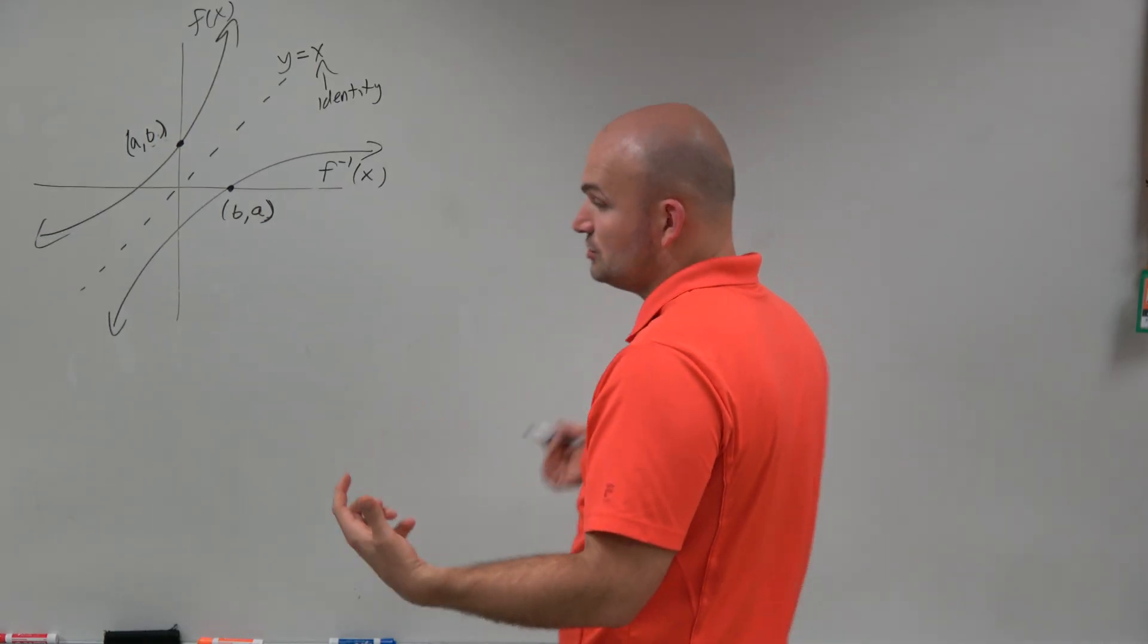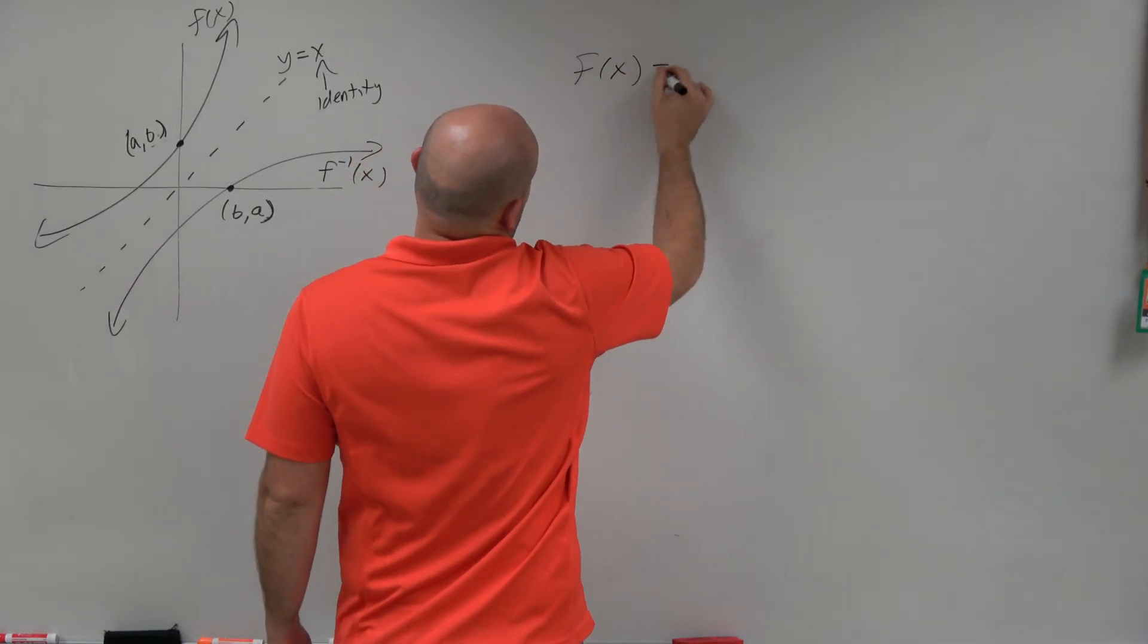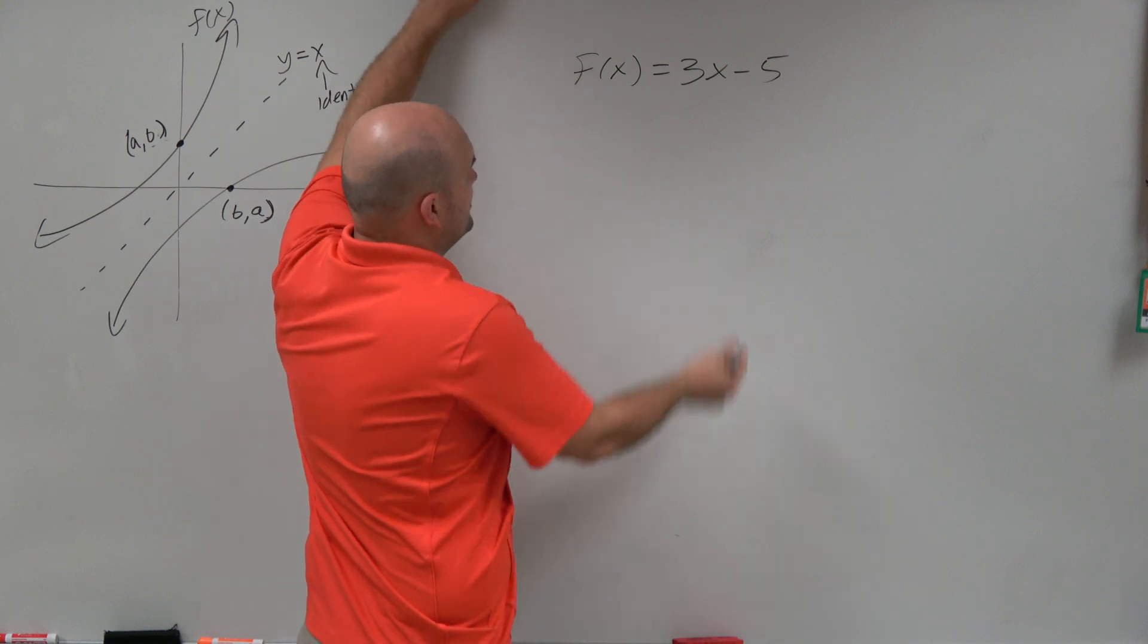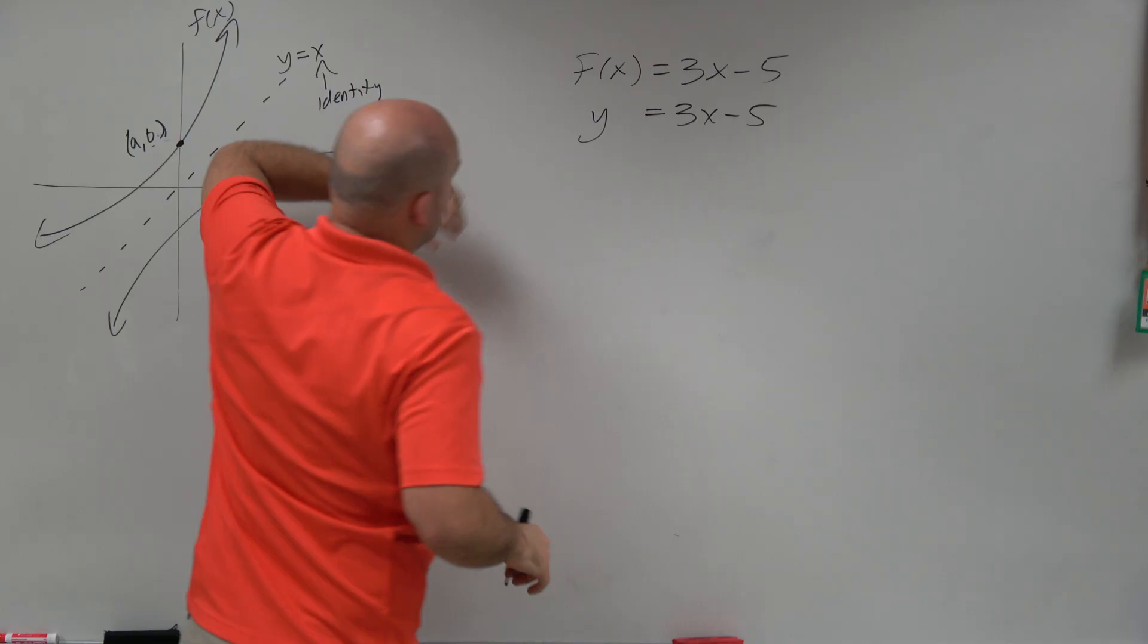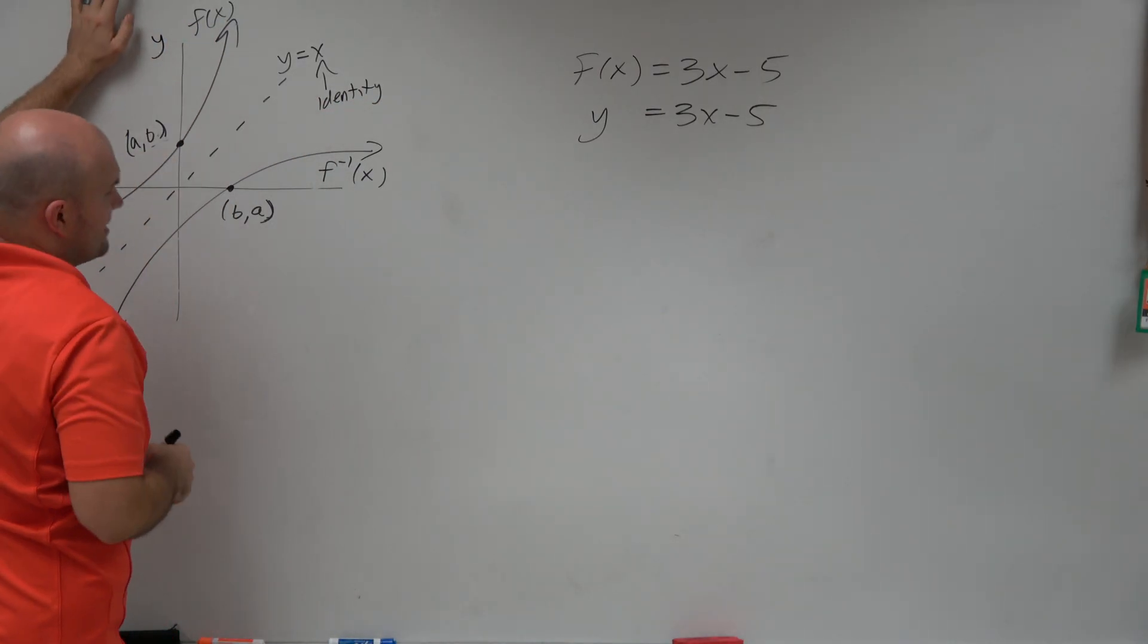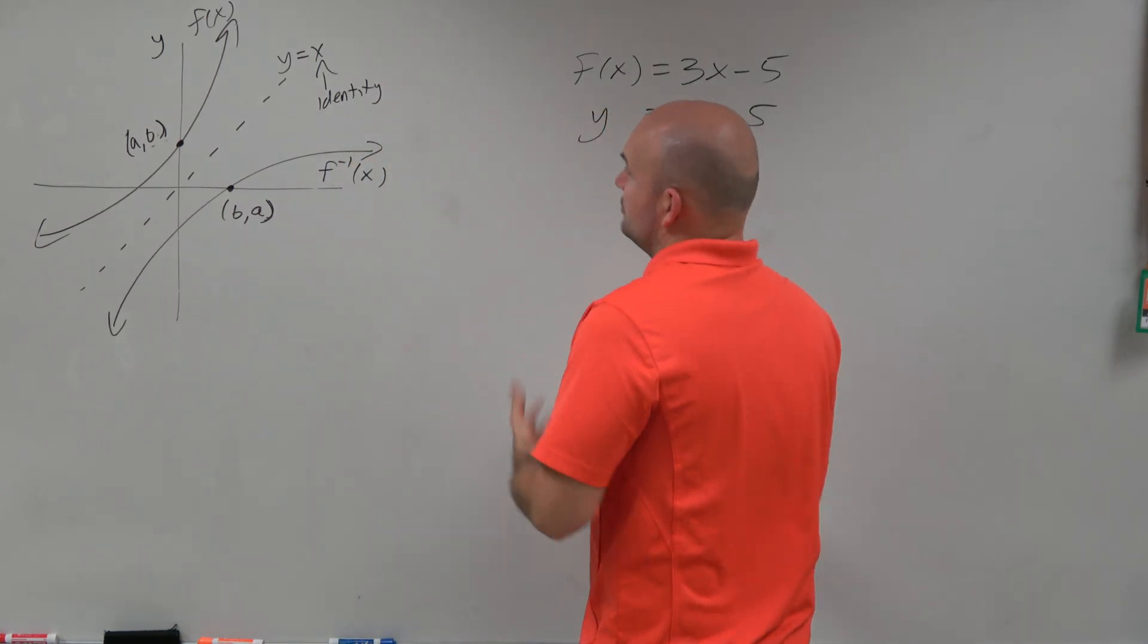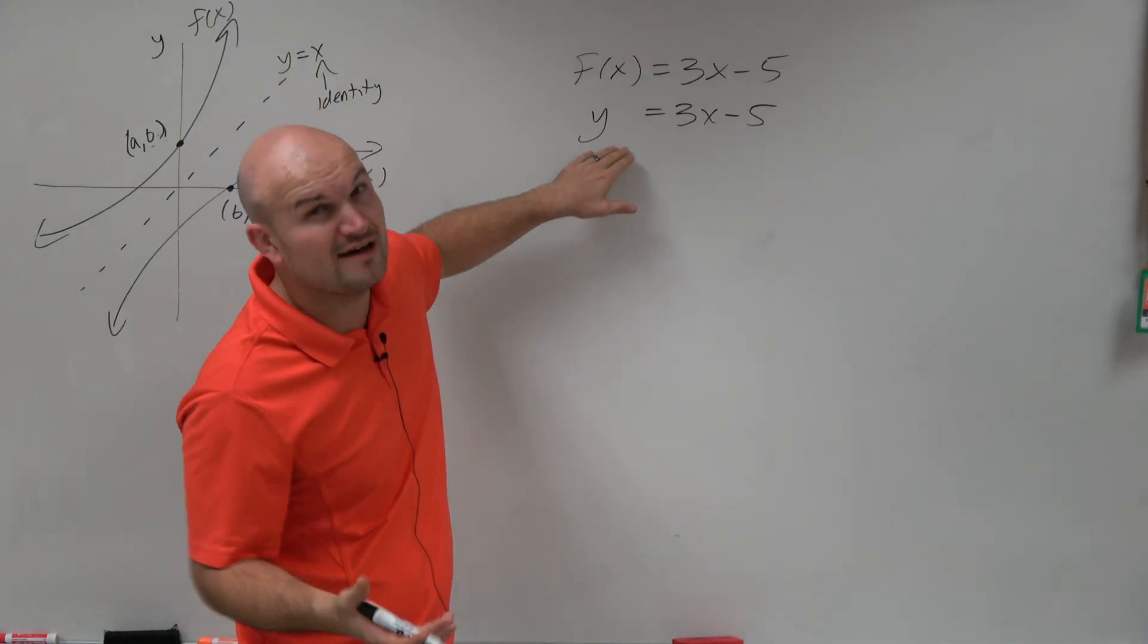And that's important when we start looking at functions, as far as writing the equation of the inverse function. So let's go back to our function 3x minus 5. The steps for finding the equation of the inverse of a function is basically, you're going to replace f(x) with y. And the reason why is because you could treat this as the f(x) axis, or you could treat this as the y axis.